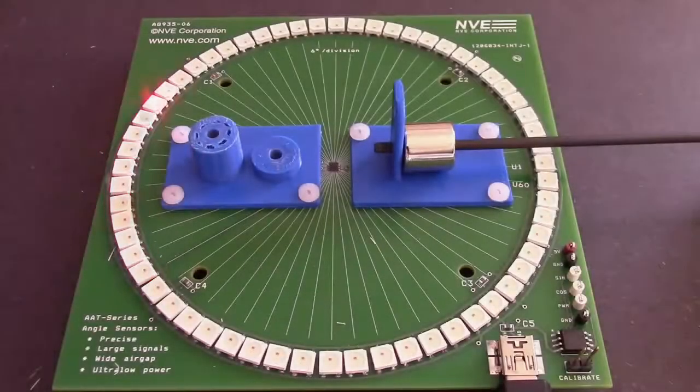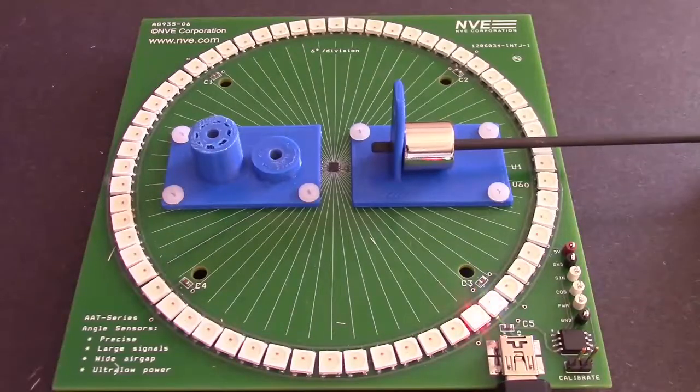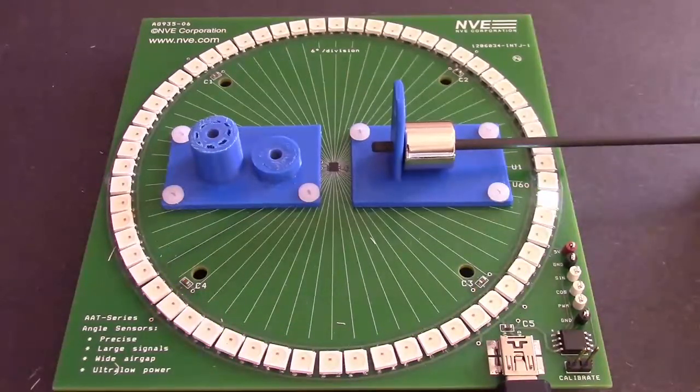Rare earth magnets work great with our sensors, but are typically unnecessary because our sensors have high sensitivity. Inexpensive ferrite magnets are common as well.